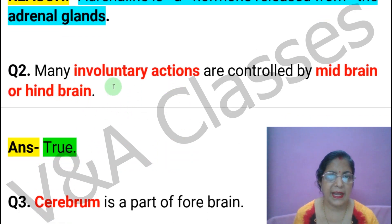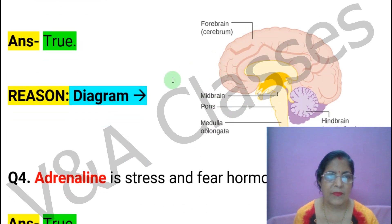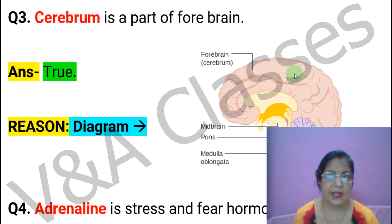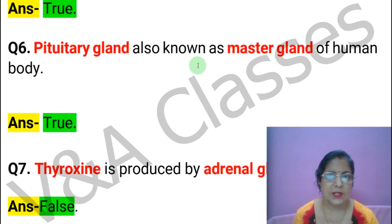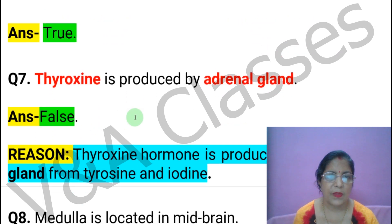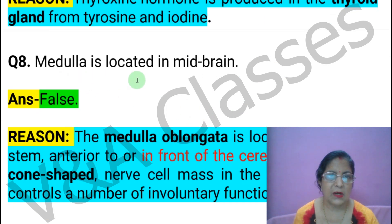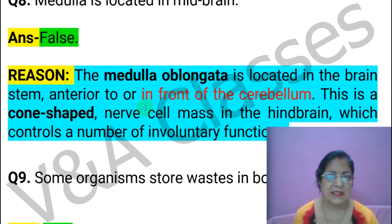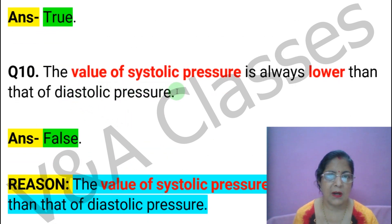Next statement: Many involuntary actions are controlled by the mid-brain or hind-brain. This statement is TRUE. Next statement: Cerebrum is a part of the forebrain. This statement is TRUE. Next statement: Adrenaline is the stress and fear hormone. This statement is TRUE. Next statement: The pituitary gland is also known as the master gland of the human body. This statement is TRUE. Next statement: Thyroxine is produced by the adrenal gland. This statement is FALSE. Next statement: Medulla is located in the mid-brain. This statement is FALSE. Next statement: Some organisms store waste in body parts. This statement is TRUE. Next statement: The value of systolic pressure is always lower than that of diastolic pressure. This statement is FALSE.